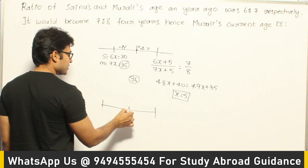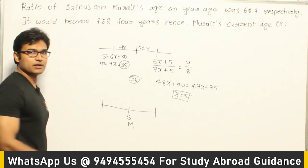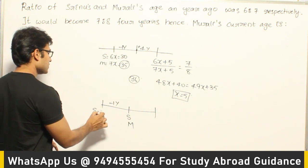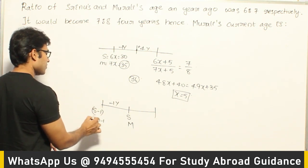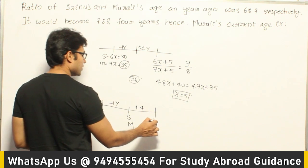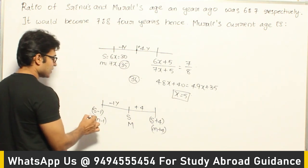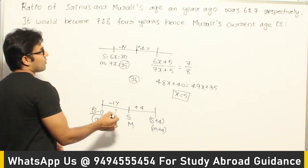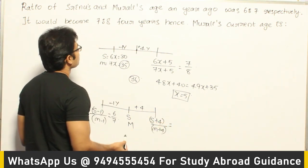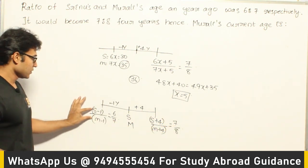Another way to solve this: assume Srinu's present age is S and Murali's present age is M. One year back, Srinu's age is S minus 1 and Murali's age is M minus 1. Four years hence, Srinu's age is S plus 4 and Murali's age is M plus 4. The ratio 1 year back is given as 6:7, and the ratio 4 years hence is 7:8.